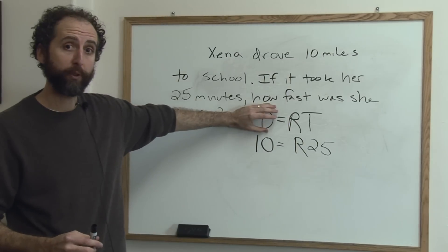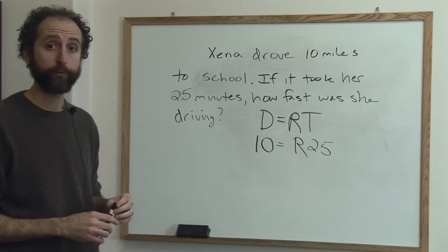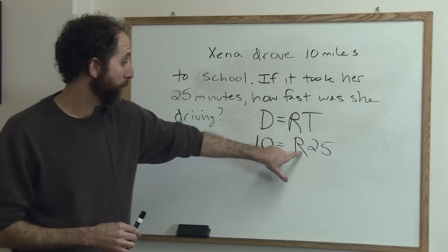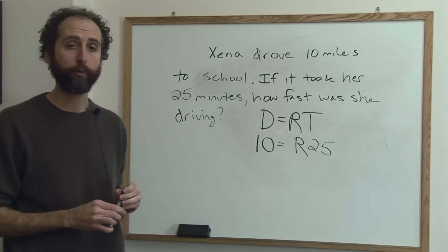Step one, identify the type of formula. Step two, plug in what you do know. Step three, solve for what you don't know. In this case, there's one variable we don't know, and it's rate. And in fact, how fast was she going? That's what they want. No coincidence.